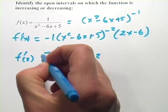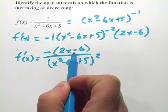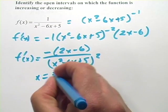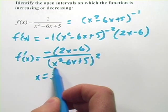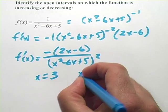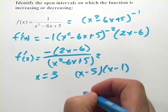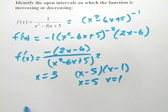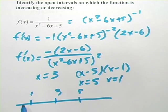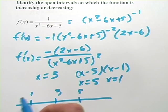Let's rewrite this as negative (2x minus 6) over (x squared minus 6x plus 5) quantity squared. This is our derivative. Where this equals 0 is where the numerator equals 0, and that would be where x equals 3. So that's one of our points of interest. And the points where it's going to be undefined is where the denominator equals 0. It looks like we can factor this as x minus 5 times x minus 1, so we have x equals 5 and x equals 1. So we've got three points of interest: 1, 3, and 5. We're going to test all four regions.